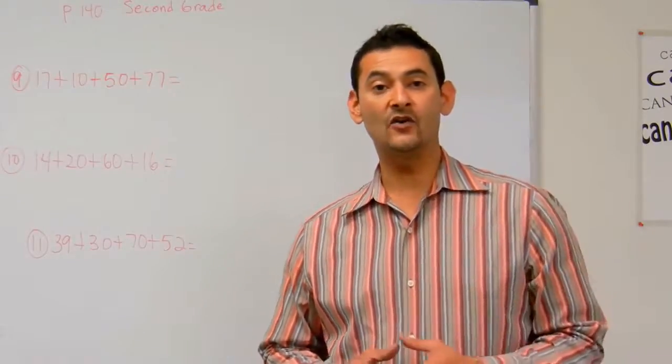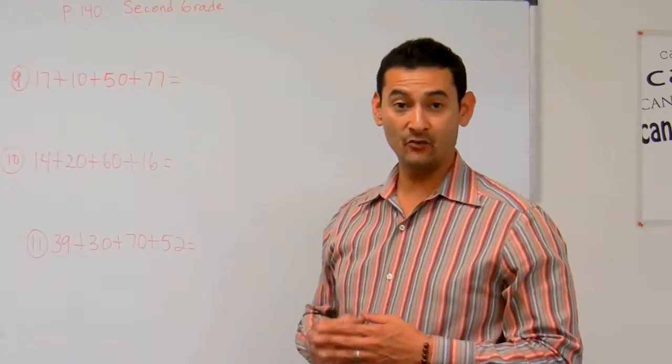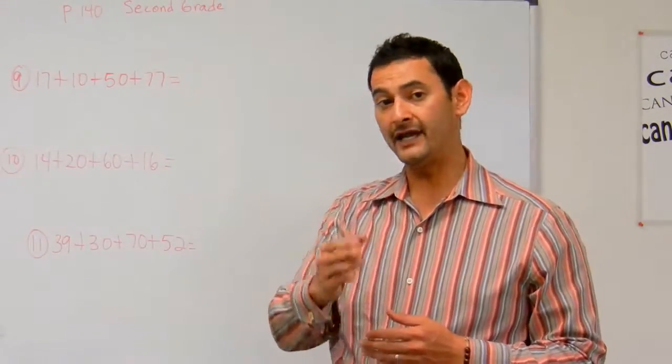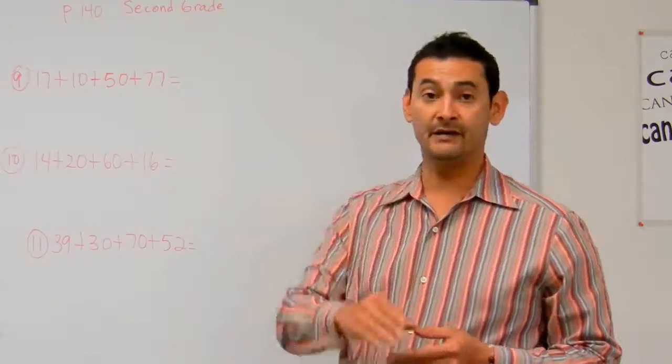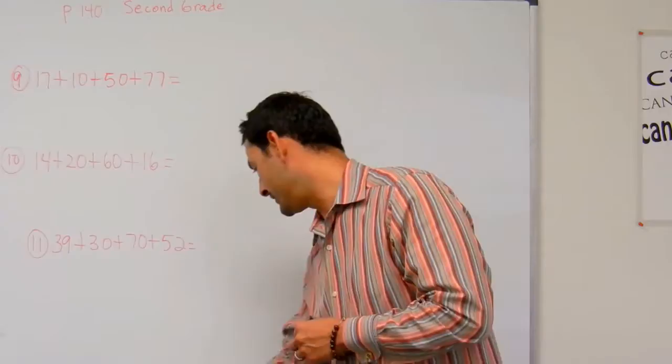Welcome back boys and girls. Let's go ahead and talk about page 140 in your second grade hybrid math workbook. Last time we added two-digit numbers in a vertical way. Now we're going to add two-digit numbers in a horizontal way. And let me show you a strategy which I'm going to use.